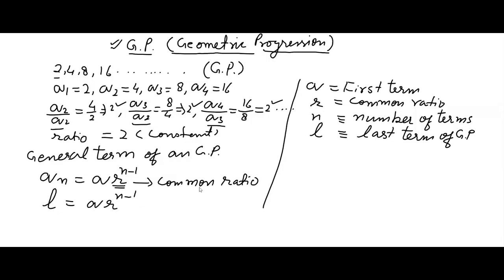And GP may be written as, like this: first term is A, second term is AR, third term AR squared, similarly AR cubed, and so on.